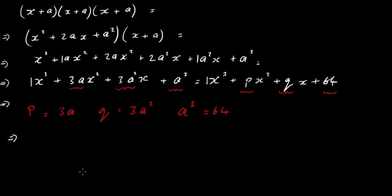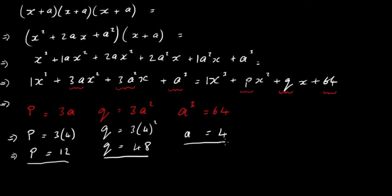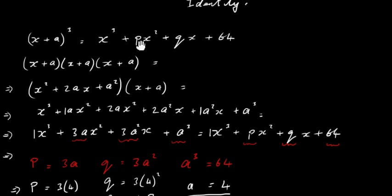We can solve the constant equation immediately — just cube root both sides. The cube root of 64 is 4, so a equals 4. Now substitute a into the other equations. Putting 4 in for p: p equals 3 times 4, which is 12. For q: q equals 3 times 4 squared — 4 squared is 16, and 3 times 16 is 48. So a equals 4, p equals 12, and q equals 48. These are the values of the unknown coefficients.